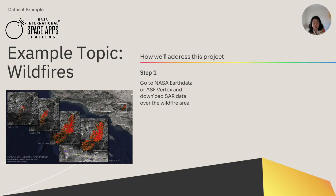Step one is to download data. We can use either the NASA Earthdata or the Alaska Satellite Facility's Vertex websites to search for SAR data over our desired study area. For this event, we would draw our bounding box over the Angeles National Forest, or upload a shapefile or GeoJSON file of the fire perimeter, which we can acquire from the U.S. Forest Service. Because we're interested in tracking the fire, we choose to download multiple data takes from September 7th to 14th. Perhaps monthly, seasonal, or annual datasets are more suitable for your application — it all depends on what type of change you're trying to study.